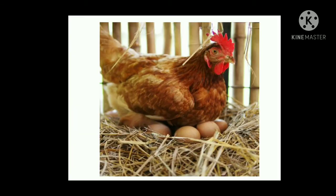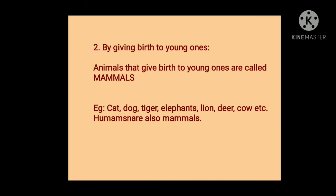Here is a picture of a mother hen laying eggs and sitting on them. Another way of reproduction used by animals is by giving birth to young ones. Animals that give birth to young ones are called mammals. Examples include cat, dog, tiger, elephants, lion, deer, cow, etc.